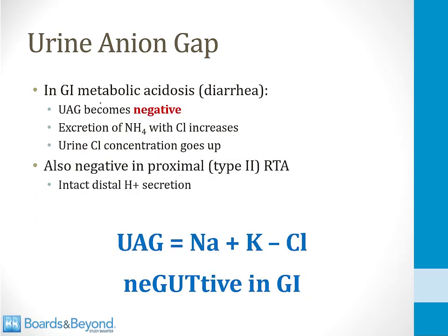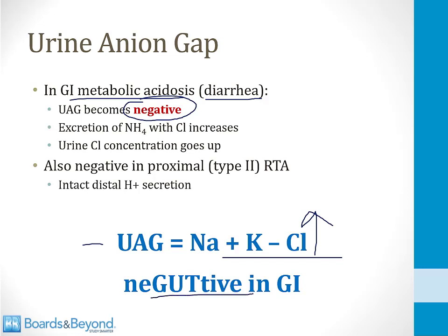Any patient who has an acidosis and has normal kidneys that are working — the urine anion gap should be negative; that's the normal finding. For example, a patient with a gastrointestinal metabolic acidosis such as from diarrhea will have a negative urinary anion gap because the kidneys are working normally, ammonium excretion goes up, urinary chloride goes up, and by this equation the urine anion gap becomes negative. The mnemonic everyone remembers is NEGATIVE in GI causes of metabolic acidosis. You can also sometimes see a negative urinary anion gap in a proximal type 2 RTA, because in this type the distal acid secretion of the nephron is intact, so urinary chloride can go up and the urine anion gap can become negative.